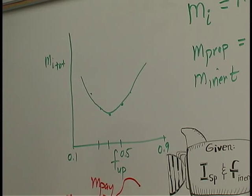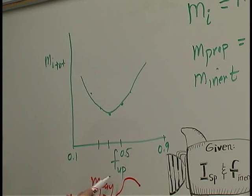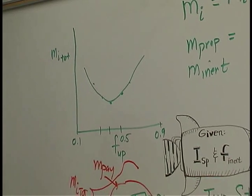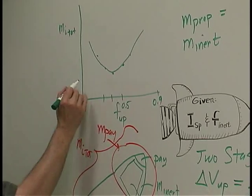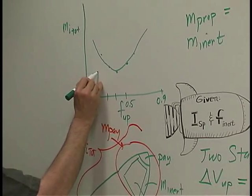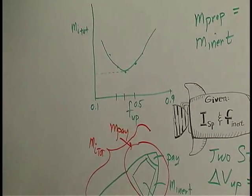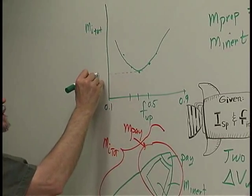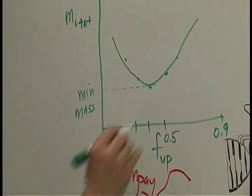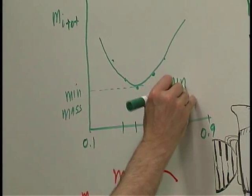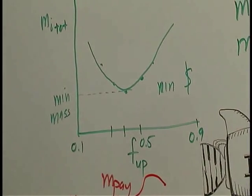This is a curve of the total mass where we're looking at fractional value that the upper stage is taking care of. The remainder being taken care of by the lower stage, and to find the minimum, we just look at the low point on this curve. That's the minimum mass of the total vehicle, and very often that is also the minimum dollar cost.